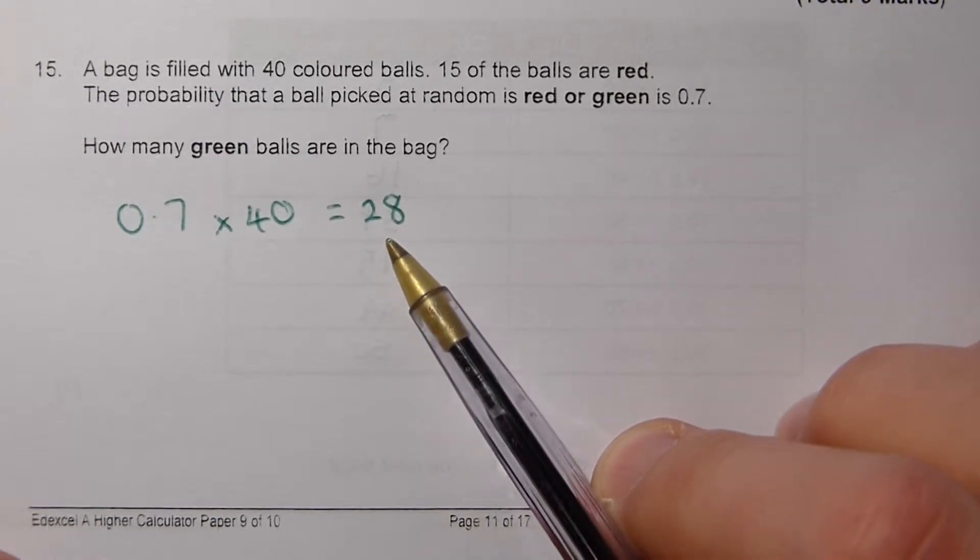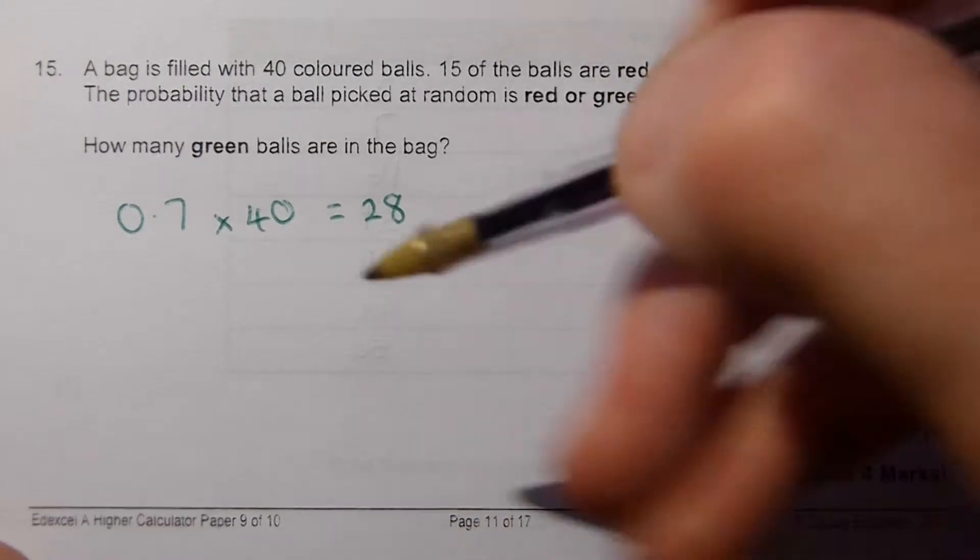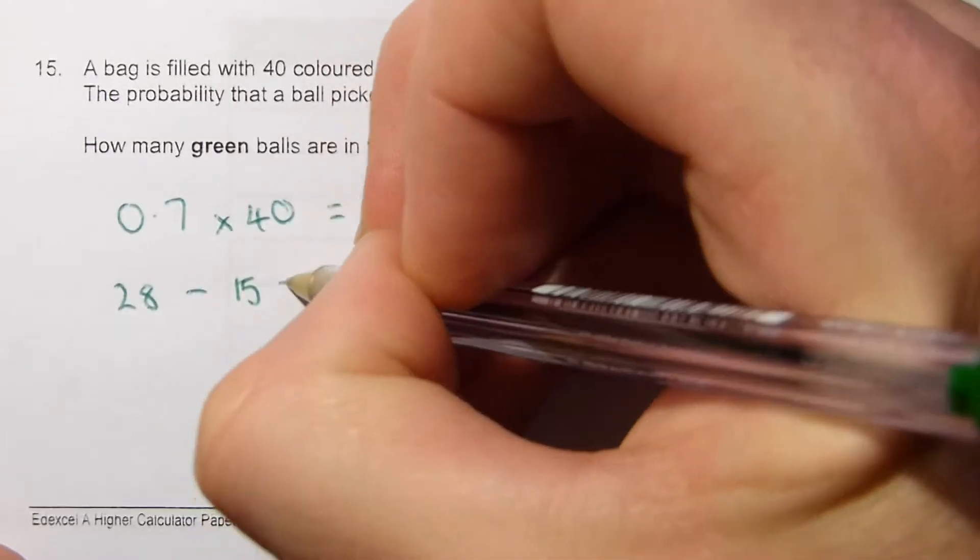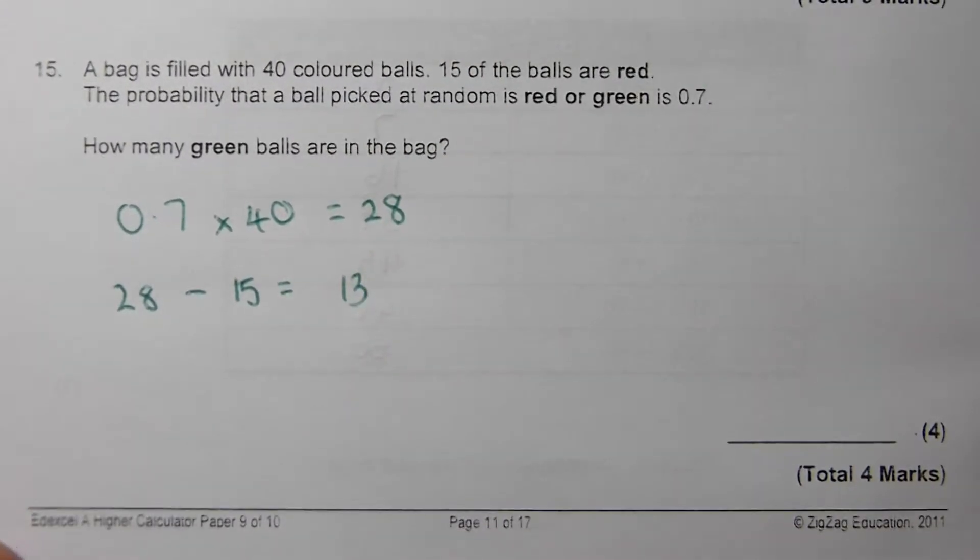So this is the combined number. Red and green balls in the bag is 28. Well, we know that out of those 28, 15 of those are red. The difference between the two will tell us how many are green.